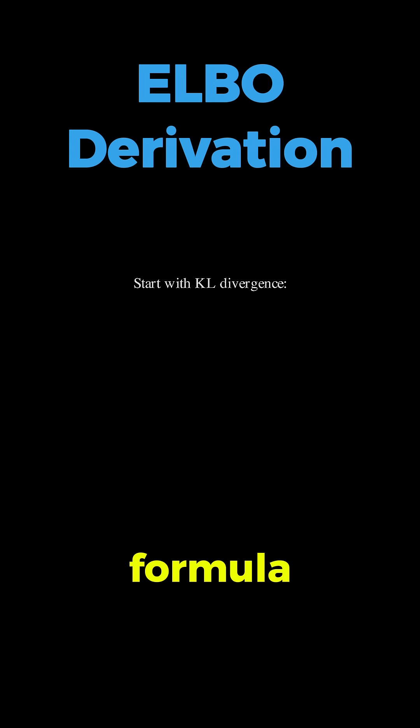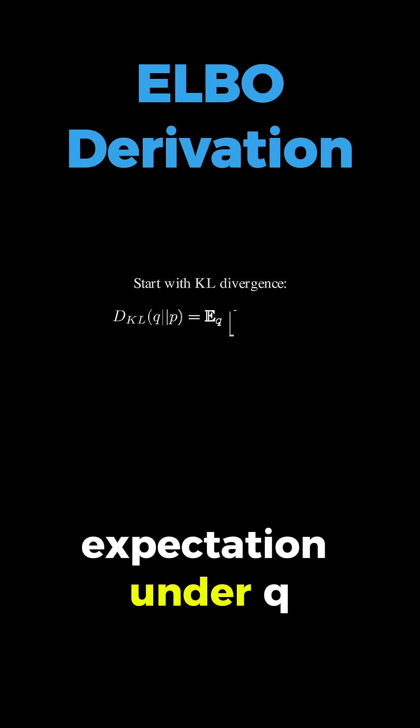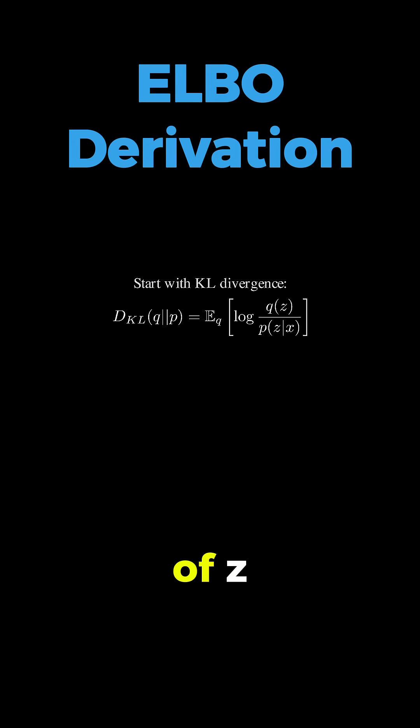We start with our KL divergence formula, which is the expectation under Q of log Q of Z divided by P of Z given X.